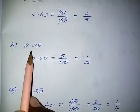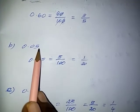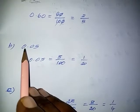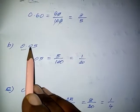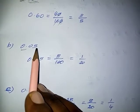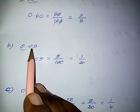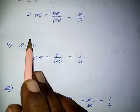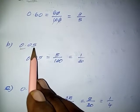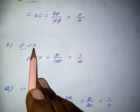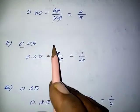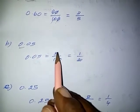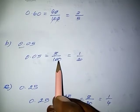Question number 2: 0.05. In this case, the integral part is 0 and the decimal part — the 10th place is 0, then the 100th place is 5. So the fraction of the decimal part is 5 by 100.